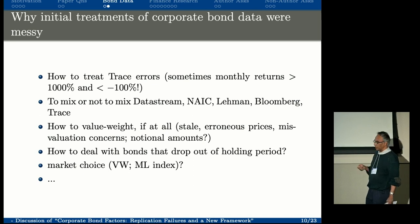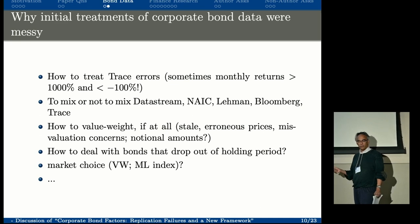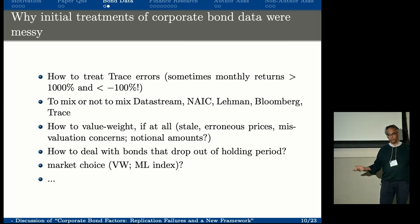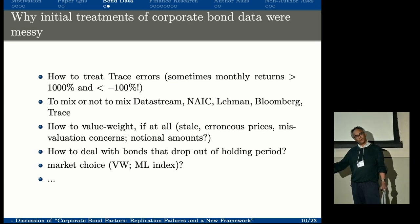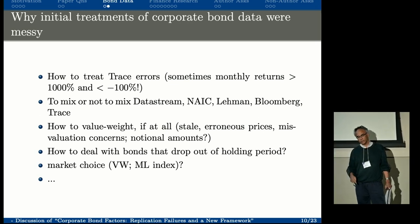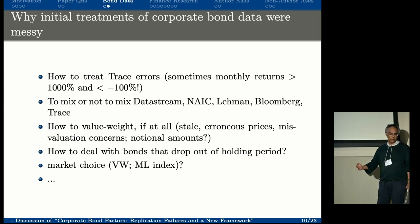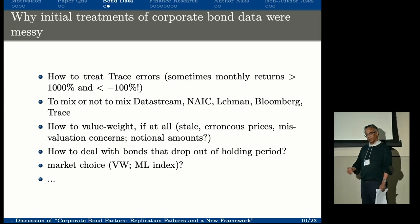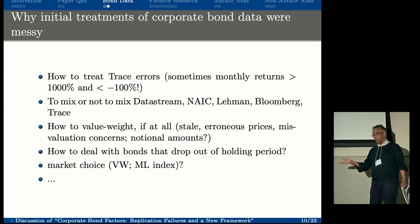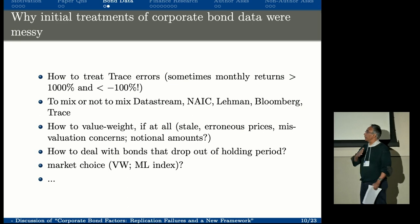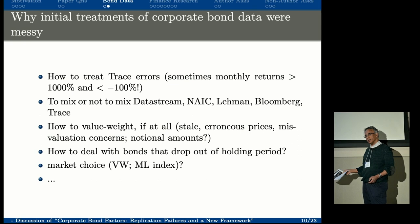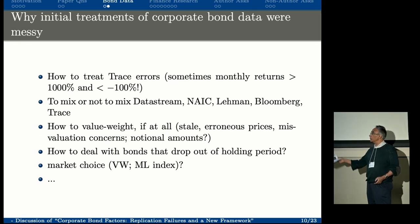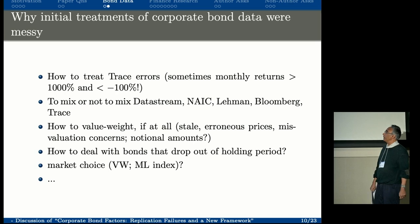Another issue is how to deal with bonds that drop out during the holding period. For example, if you're doing momentum and six months in they're there but the next month they drop out—what do you do? Should you drop the observation in the formation period? Should you drop it only looking forward? That makes a difference and you have to think carefully as a researcher. These are all discussions authors have, but they don't make it into the paper, leaving readers wondering what to do to replicate it. There's also whether to evaluate the full market of all bonds or use a standardized index—that makes a difference too, and different papers do it differently.